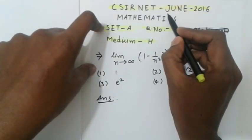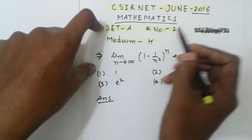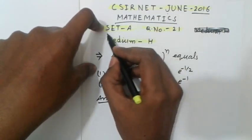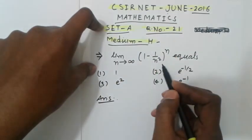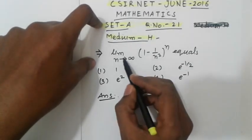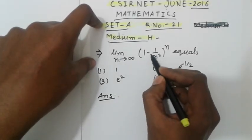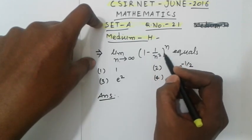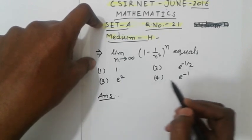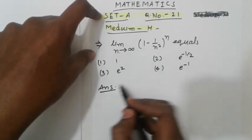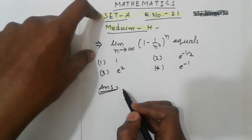CSIR NET June 2016 mathematics, Set A, question number 21, medium difficulty. The question asks: limit as n tends to infinity of (1 - 1/n²)^n equals. Options given: (1) 1, (2) e^(1/2), (3) e^2, (4) e^(-1). Now for the solution to find the answer from the given options.